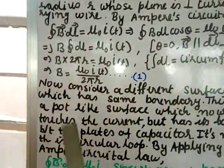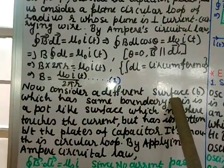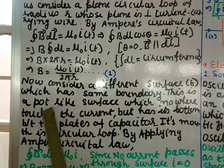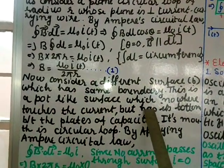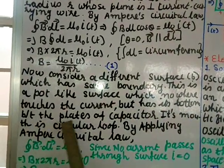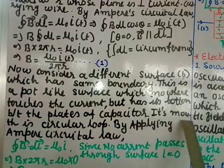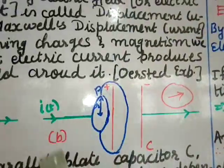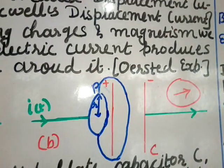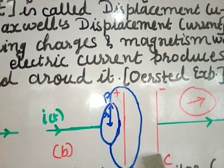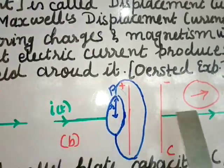Now consider a different surface from figure b — a pot-like surface with the same boundary, which nowhere touches the current but has its bottom between the plates of the capacitor. Its mouth is the circular loop. Here we consider a circular loop passing between the plates of the capacitor without touching the current anywhere, and apply Ampere's circular law.